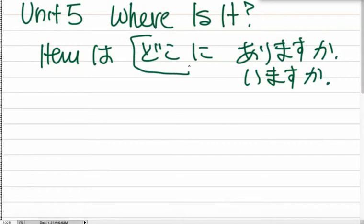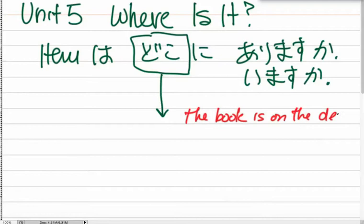And when we answer, we see that doko word, and we're going to take that doko word out and put our answer in. When we do this in English, we generally say something like the book is on the desk, in which we give the location first, and then we give the reference point.